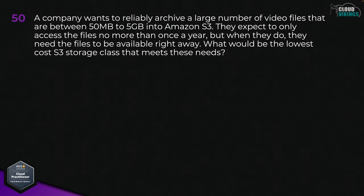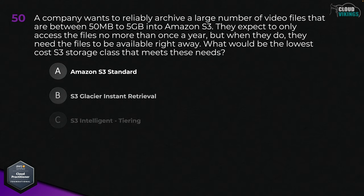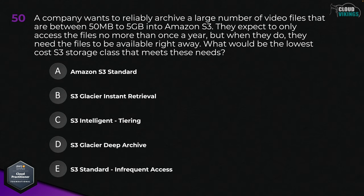Question fifty: a company wants to reliably archive a large number of video files between 50 megabytes and 5 gigabytes into Amazon S3. They expect to access the files no more than once a year, but when they do, they need the files available right away. What would be the lowest cost S3 storage class that meets these needs? Options are: A, S3 Standard; B, S3 Glacier Instant Retrieval; C, S3 Intelligent-Tiering; D, S3 Glacier Deep Archive; or E, S3 Standard-Infrequent Access. The lowest cost option here would be B, S3 Glacier Instant Retrieval.